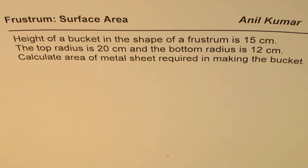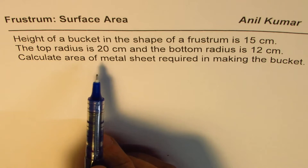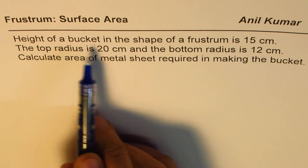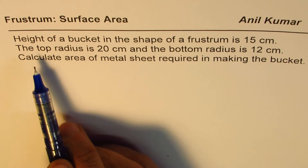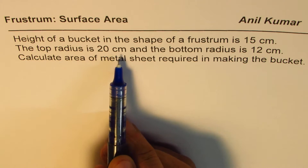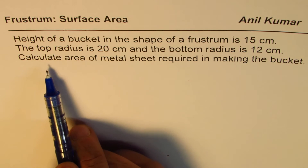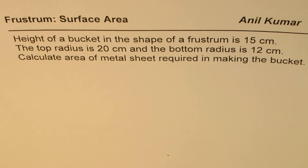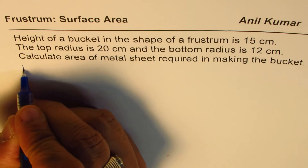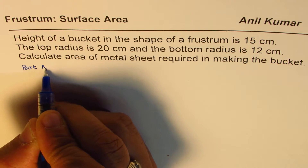Let me go through this and then we'll discuss further. We'll calculate the area of a frustum in this. The height of a bucket in the shape of a frustum is 15 cm. The top radius is 20 cm and the bottom radius is 12 cm. We need to calculate the area of the metal sheet required in making the bucket. In part A, we actually had the same question with a variation.